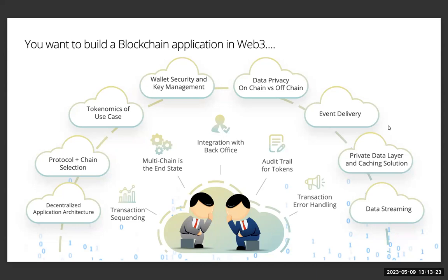Embrace the future with multi-chain capability as the blockchain ecosystem evolves. Your application should become part of an interconnected ecosystem that fosters collaboration, innovation, and growth. Smooth integration with back-office systems is essential. Seamless bridges between the blockchain and traditional enterprise infrastructure enable data synchronization and process automation, increasing efficiency. Transparency and accountability are at your fingertips with tokens. Tracking the movement of tokens throughout your ecosystem provides valuable insights and ensures compliance with regulatory requirements.